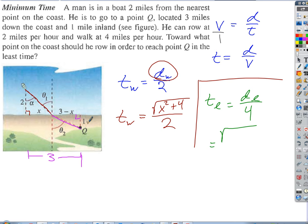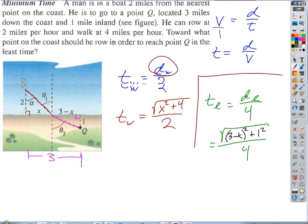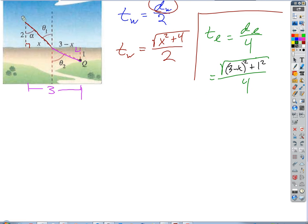So then we end up with the quantity (3 - x)^2 plus 1 squared over 4. We can simplify the top. What's (3 - x)^2 plus 1? 9 minus 6x plus x^2 plus 1 is 10.